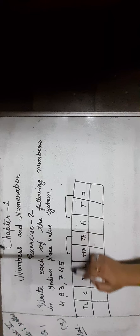Now learn how to read and write large numbers in the Indian place value system. Question number 1: write each of the following numbers in the Indian place value chart. We draw the chart with columns: ones, tens, hundreds, thousands, ten thousands, lakhs, ten lakhs, crores, and ten crores — grouped into ones period, thousands period, lakhs period, and crores period.